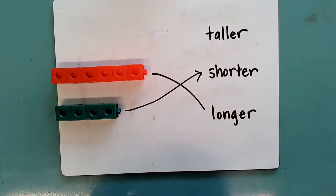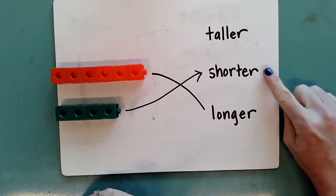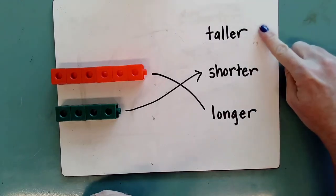So as you begin to compare these objects, use the words such as shorter, longer, or taller.